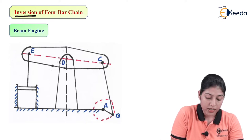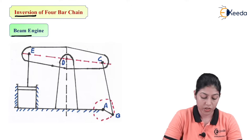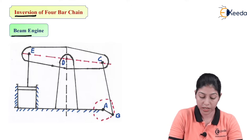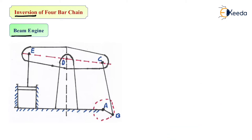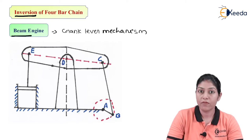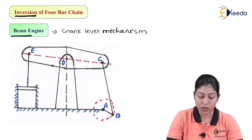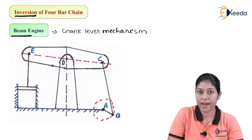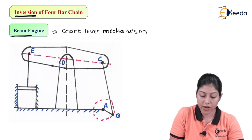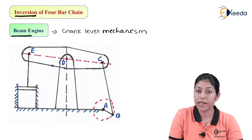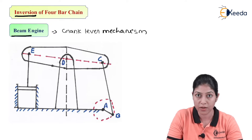The first inversion I am going to discuss is called the beam engine. It is also called the crank and lever mechanism. Basically there are two main parts: one is the crank and another is the lever — that is why it is called crank lever mechanism. This is the first inversion of four-bar chain or four-bar chain mechanism.